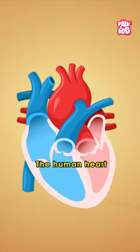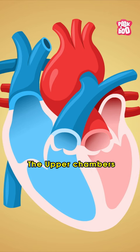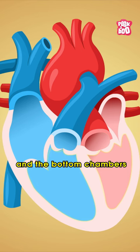The human heart is made up of four different chambers. The upper chambers are called the left and right atrium and the bottom chambers are known as the left and right ventricles.